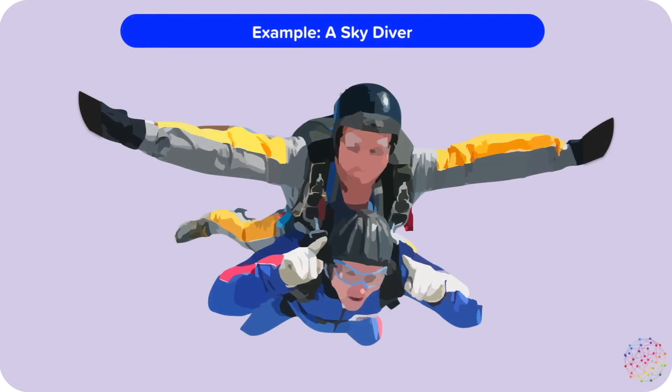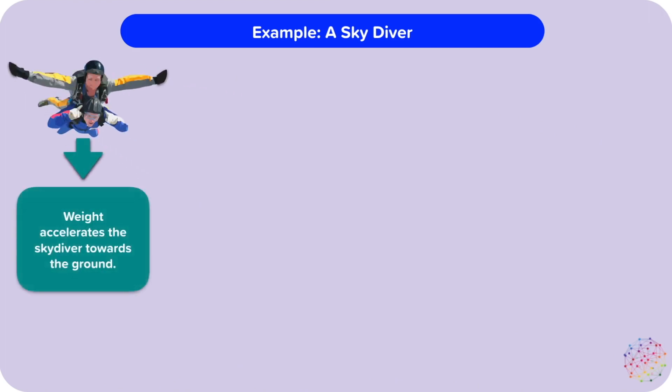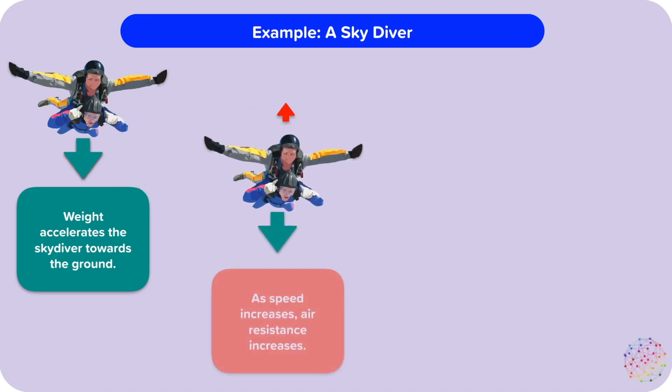Let's look at another example: skydiving. When a skydiver first jumps out of a plane, their weight accelerates them towards the ground — we have an unbalanced force downwards, so they speed up downwards. But as they speed up, the air resistance acting on them increases. Think about walking into the wind compared to running into the wind — you'll feel a much larger force against you if you run. So the faster our skydiver is falling, the larger the force of air resistance acting on them.